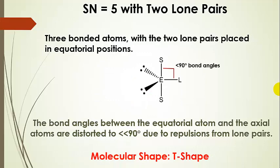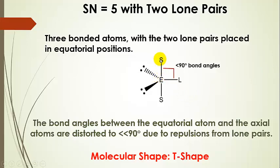If we have three bonded atoms and two lone pairs on the central atom, both lone pairs go in equatorial positions — they could go in any equatorial positions. That leaves only three bonded atoms, and the resulting shape is a T-shape. Because lone pairs are strongly repulsive, they repel the bonding pairs much more and repel each other too, creating very severe repulsions. So these bond angles are going to be less than 90 degrees — the lone pairs take up more than their share of room, squeezing the bond angles together.